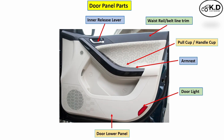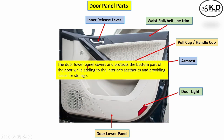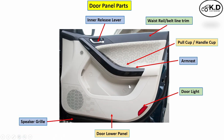The next part is the door lower panel. Its function is to hold all child parts, provide storage such as a map pocket, and cover other mechanisms, housings, and wire harnesses.